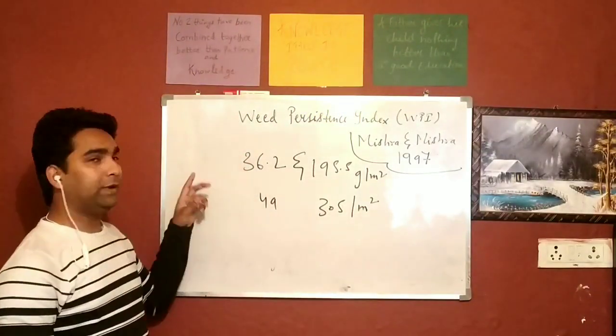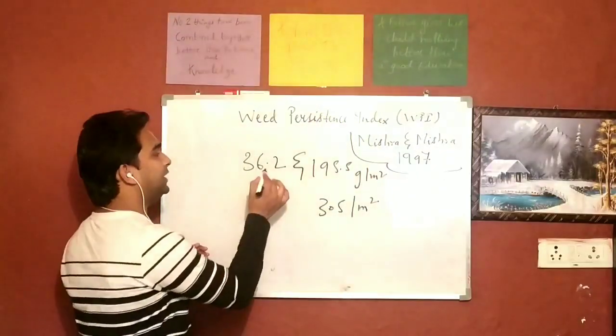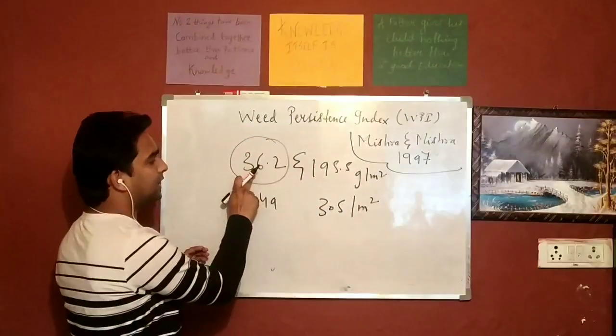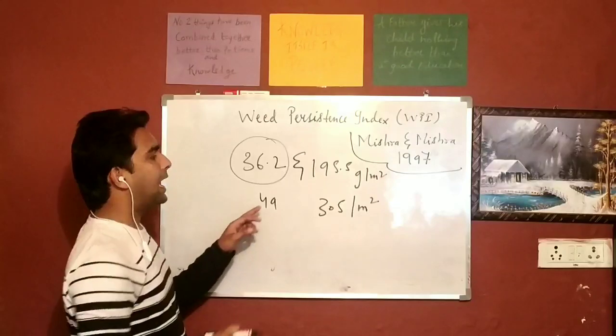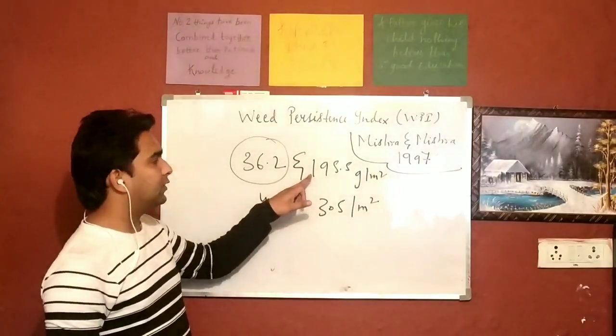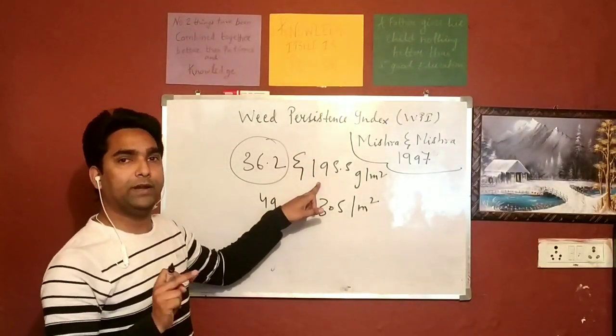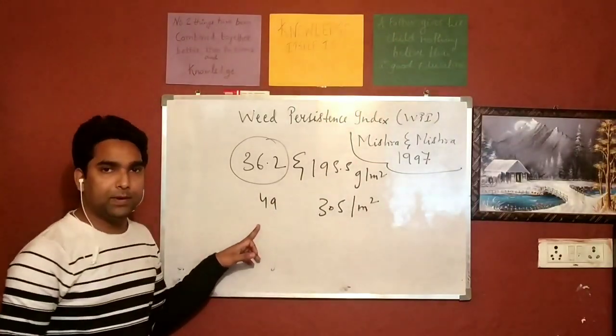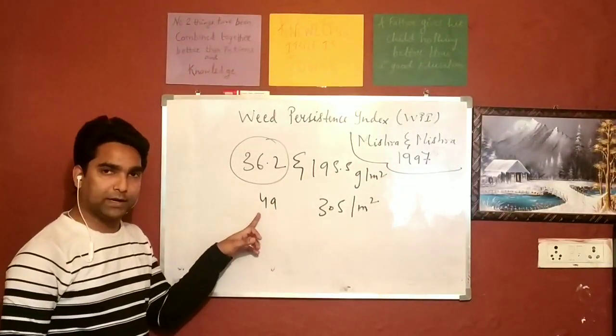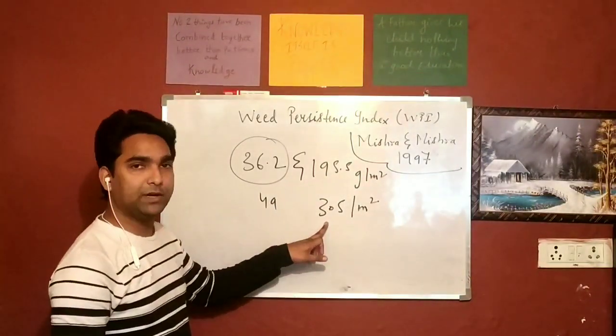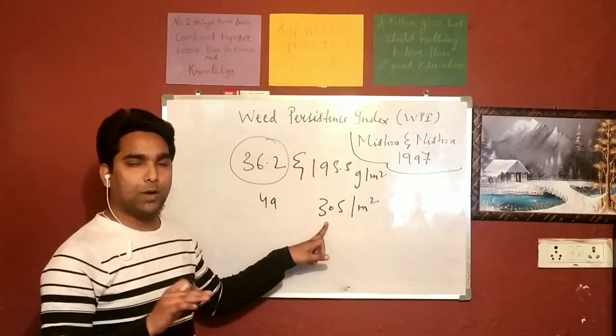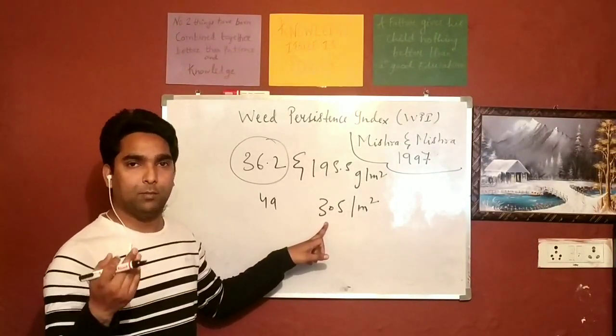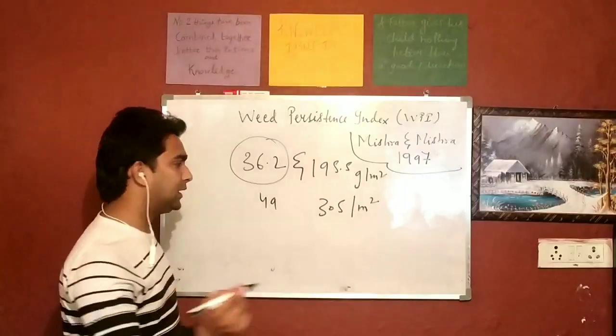You have been given the weed dry matter in the treated plot, which is the butachlor at 36.2, and in the weed check the weed dry matter is 195.5, and the weed population in the treated plot is 49 and in the weed check is 305. So you can directly put it in your formula and calculate it.